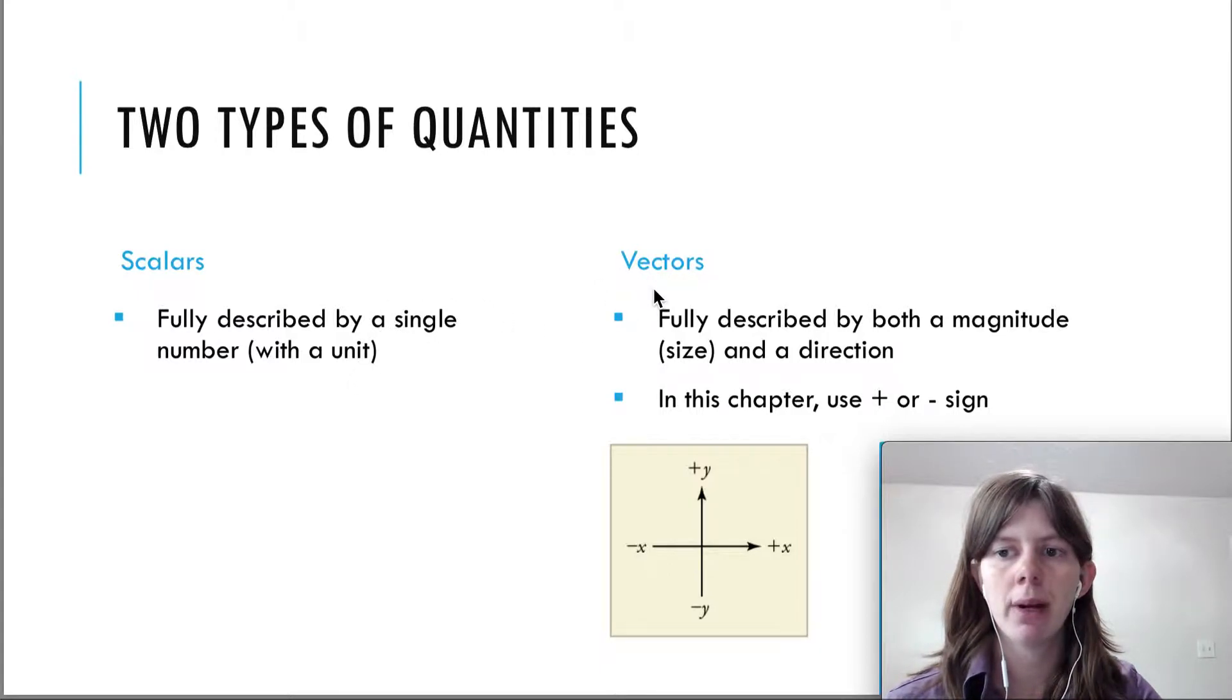A vector, on the other hand, is something that has a magnitude and a direction. For example, let's say that you are moving at 60 miles an hour to the right - that has a magnitude and a direction. There's an amount to that number and the direction. That's actually a velocity that we'll talk about soon.